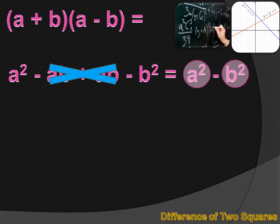I've got a squared, and that's a square. And I've got b squared, and that's a square. And a squared minus b squared is the difference of two squares.